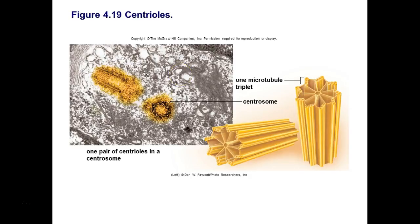Centrioles are made of microtubules, just like the cytoskeleton, and the microtubules come together to make triplets. These triplets are joined together in the center.